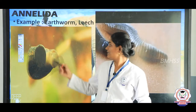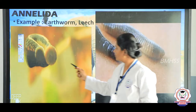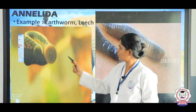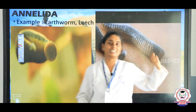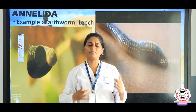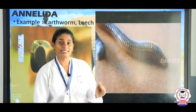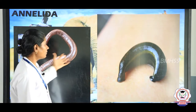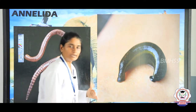The leech also moves through locomotion using lateral appendages. Annelida have very soft, segmented bodies. Examples are earthworm and leech.